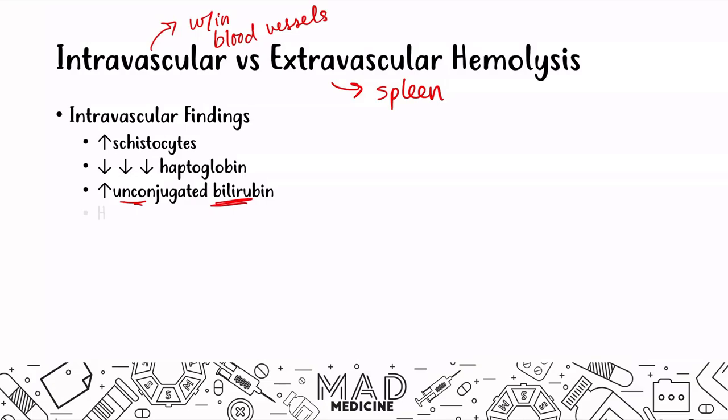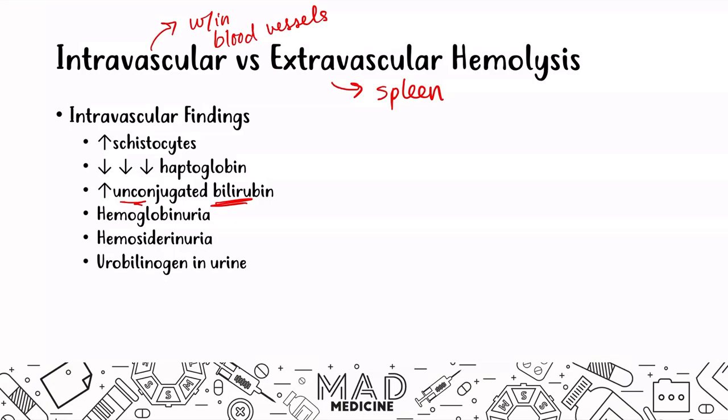In intravascular hemolysis, you will see hemoglobinuria because the hemoglobin is going through your urine. You're also going to see hemosiderinuria. You'll also see urobilinogen in your urine — because even though you have an increase in unconjugated bilirubin, your body is still conjugating bilirubin in the liver, just oversaturating that capacity. The conjugated bilirubin then goes to the intestine where it's broken down into urobilinogen, which is then broken down into urobilin and urinated out. Your body has so much hemoglobin that the whole production and excretion of hemoglobin-derived substances are oversaturated.